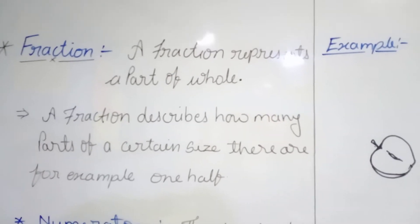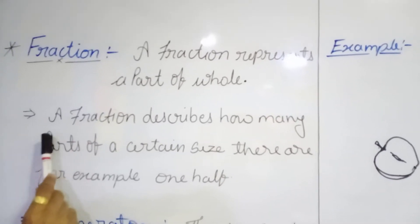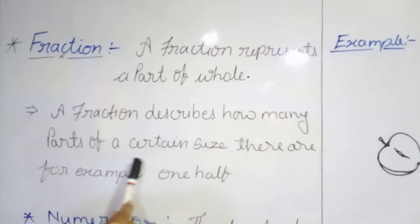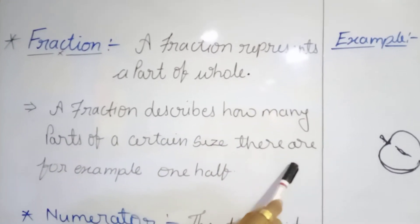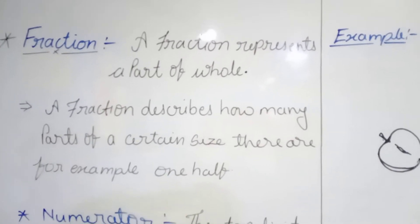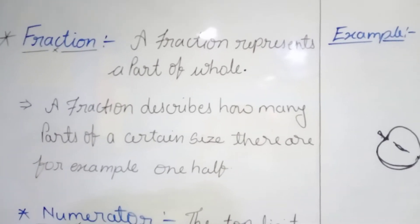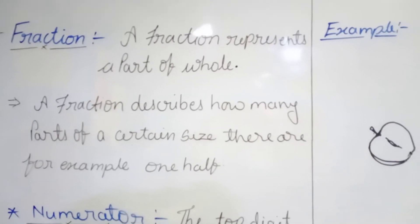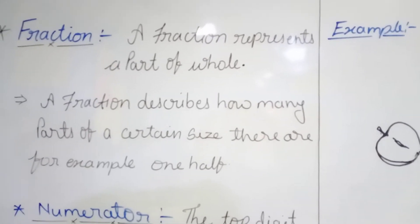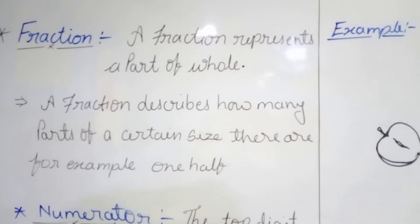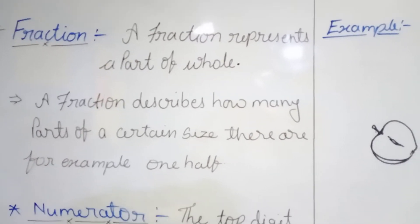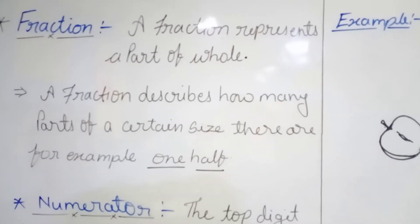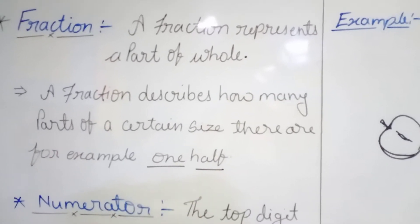Now, one more thing regarding the fraction. A fraction describes how many parts of a certain size we have. For example, 1 half - if we have any part of that whole and we divide it into 2 equal parts, we can say that is 1 half of that. The total is 1 and we divide it into 2 parts, so that is the half.